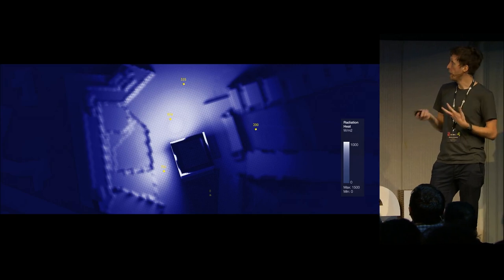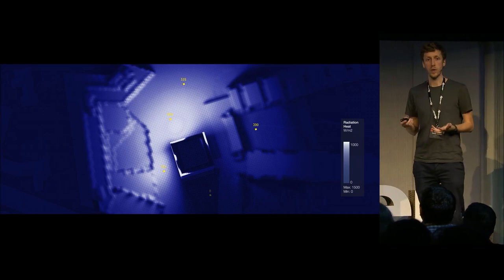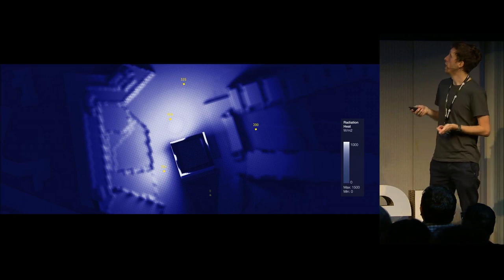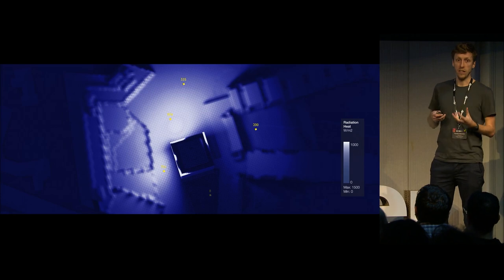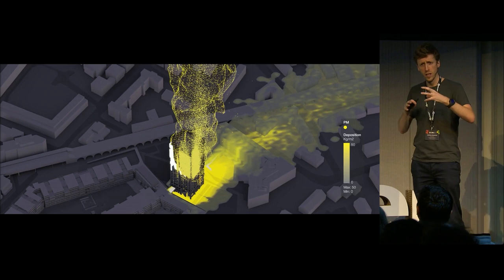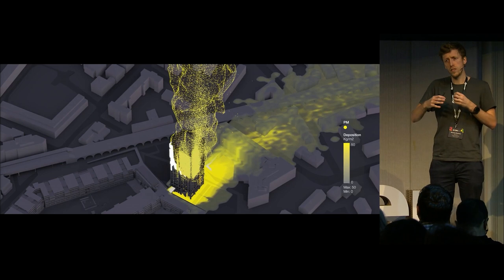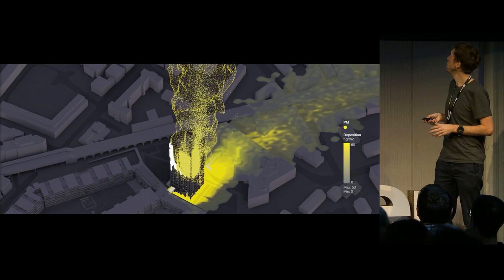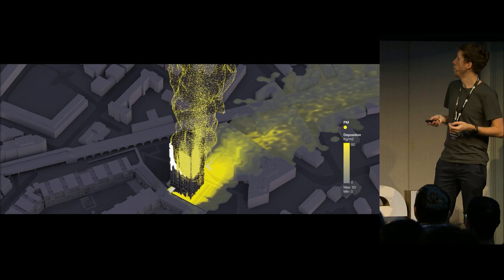We also know, based on that fire spread mapping, the likely amount of heat radiation experienced on the ground at certain points around the tower. Here you can see a plan view of the building where the lighter color indicates greater levels of heat radiation. That fire spread also gives us an idea of the smoke cloud that would have come from the tower, and also the particulate matter emitted from the building and then deposited over London. The yellow indicates particulate matter quantity deposited on the ground around the tower.